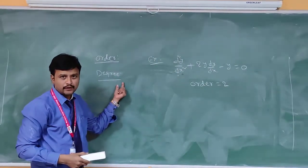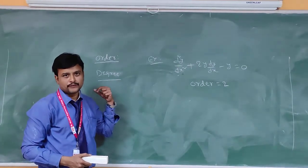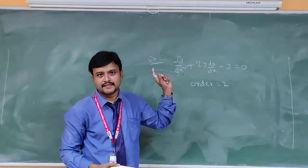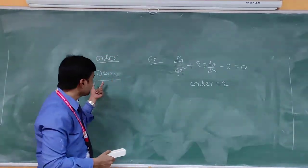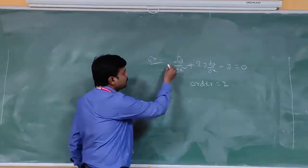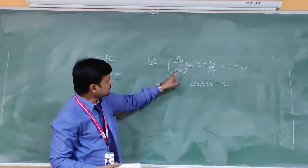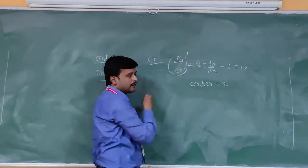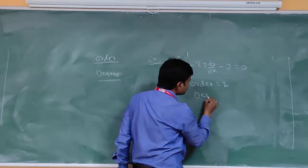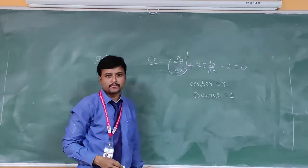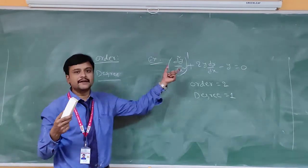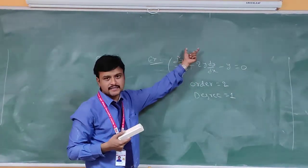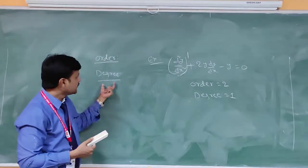Now coming to the degree of a differential equation. The degree is the power of the highest order derivative after removing fractions and radicals. For the same example, the power of the highest derivative — the second derivative — is 1, so degree is equal to 1. Now consider d²y/dx² = √(1 + (dy/dx)²). There is a radical here, so we square both sides to get d²y/dx² whole squared = 1 + (dy/dx)², which gives d²y/dx² whole squared minus (dy/dx)² minus 1 = 0. Now the power of the highest derivative is 2, so the degree of this differential equation is 2.